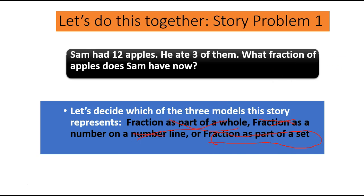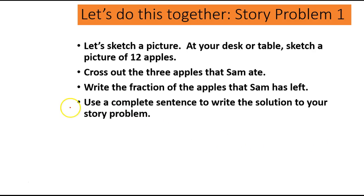Now let's solve this. So we can sketch a picture using our table, our journals, right? And make 12 apples. And then we can cross out the three apples that Sam ate. And then we can look at the fraction of the apples that Sam has left. We'd have to count how many. And then we would write our answer using a complete sentence. So I want you to pause this video and do that.